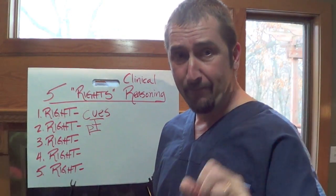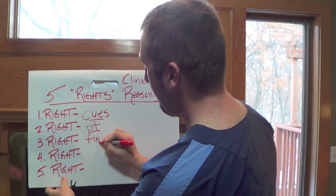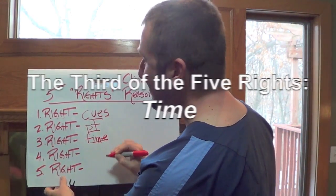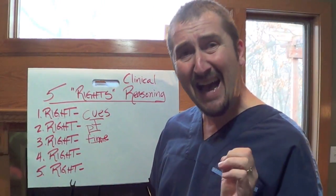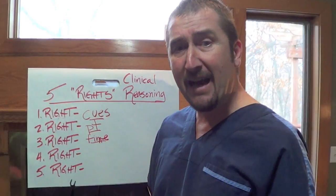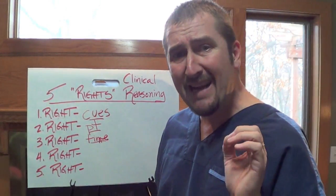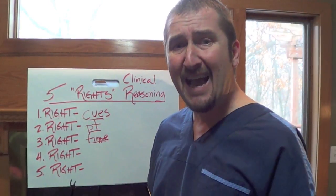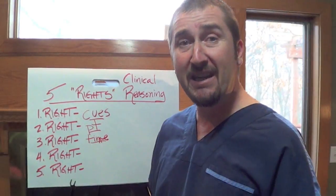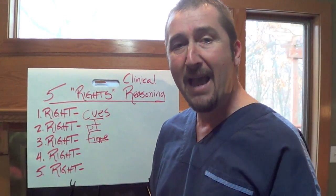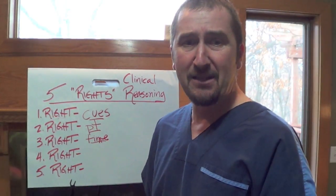Number three: the third right is the right time. This refers to the timeliness of identifying a high-risk patient among multiple patients the nurse will care for, recognizing early signs of a complication, and then initiating nursing interventions at the right time and in the right sequence — which is imperative to practice.